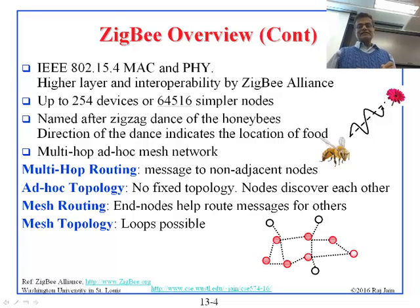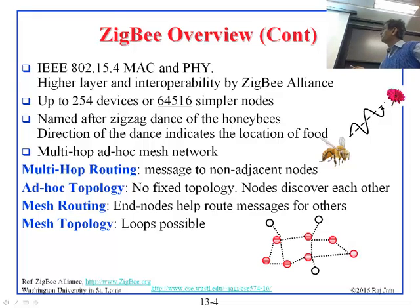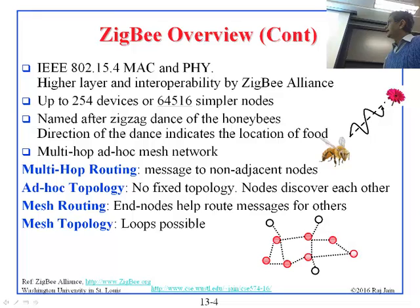ZigBee supports multi-hop ad hoc mesh networks. It is a mesh ad hoc network — ad hoc means peer-to-peer, so there is no access point. Multi-hop routing means you can go from one node to the next using intermediate nodes. Multi-hop means messages are sent through other nodes; ad hoc means no fixed topology and nodes discover each other; mesh means there are cycles and loops are possible.